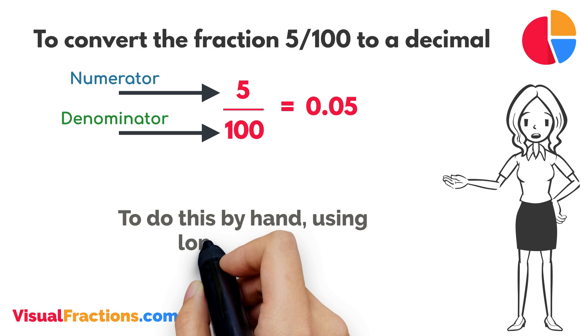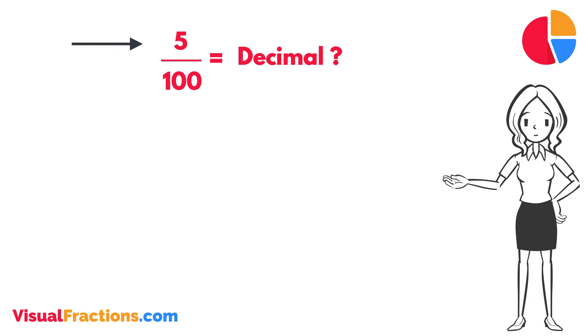To do this by hand using long division, we start by writing 5 as the dividend and 100 as the divisor.